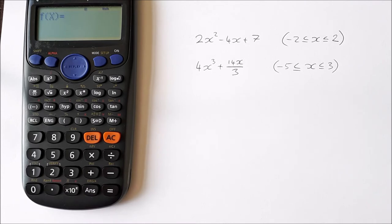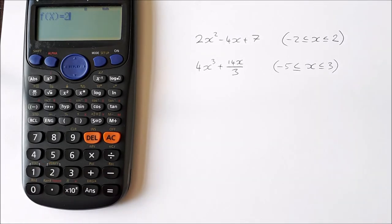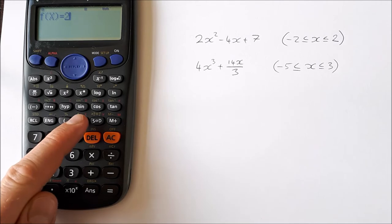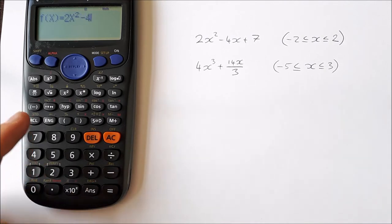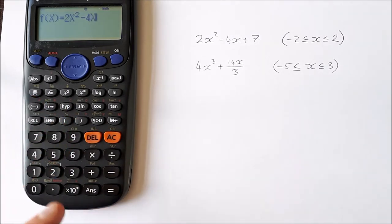Now to input our function 2x², you press 2. To get x, you need to press Alpha and X, so that gives us 2x and we can square it. So 2x² minus 4. To get x, it's Alpha X, and then plus 7 like that. Press equals.